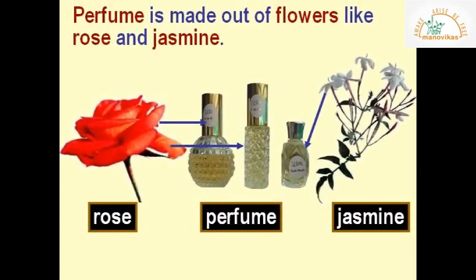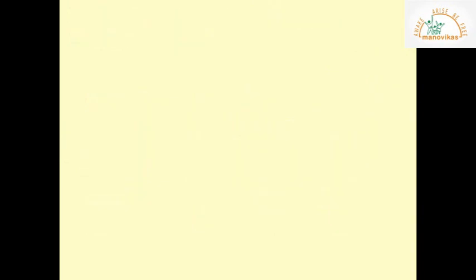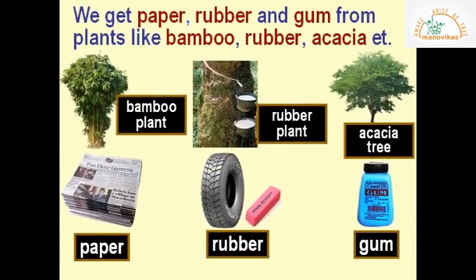Perfume is made from flowers like rose and jasmine. We get paper, rubber, and gum from plants like bamboo, rubber, and acacia.